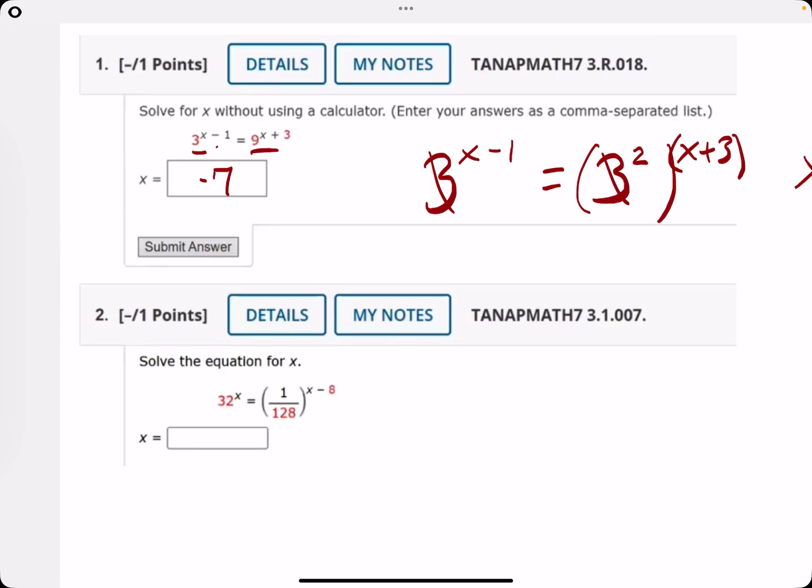And that should do it. If you ever wanted to check, you could plug in negative 7 to the exponents here. You get 3 to the negative 8 and then you get 9 to the negative 4.